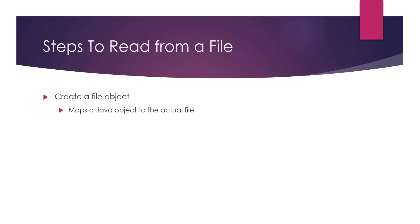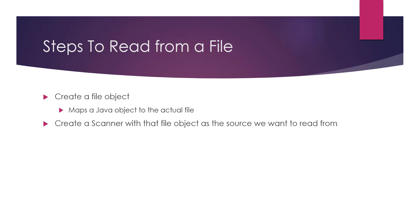Once we have this File object, we'll use it as our source of input to a Scanner. Before, when we were reading from the console, we used System.in as our source of input. Now the source of input will be this File object that we created, which maps to the actual text file in our system. Once we have our Scanner reading from that file location, we'll use Scanner methods like nextLine, nextInt, and nextDouble to read the actual data from that file.